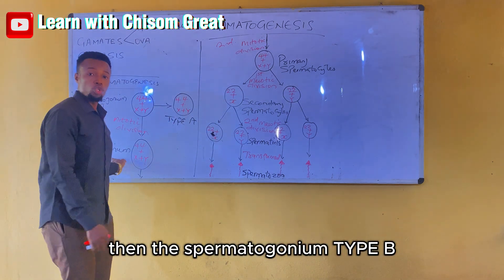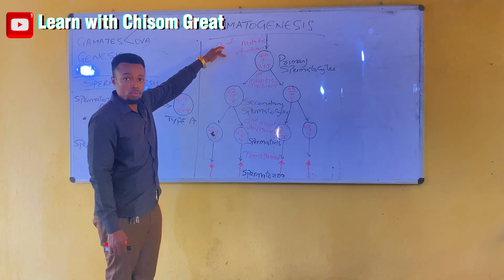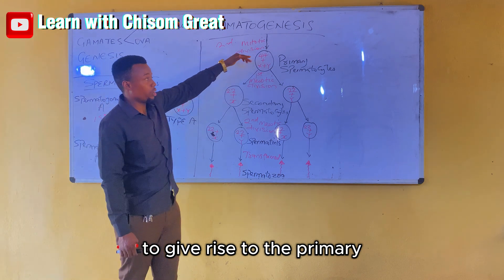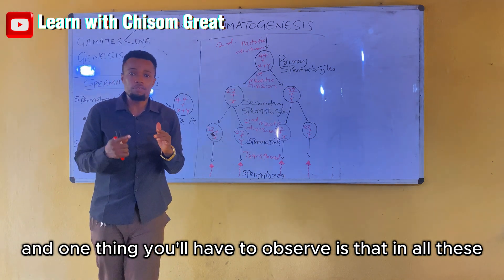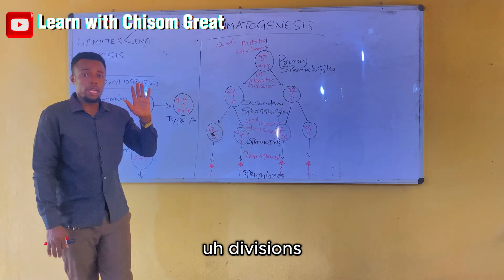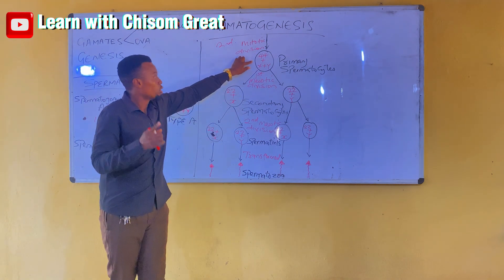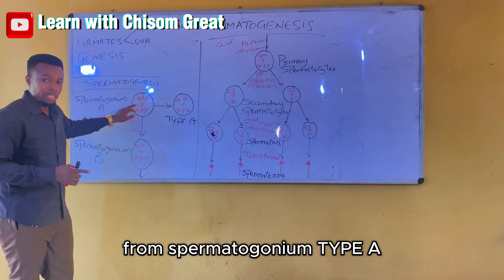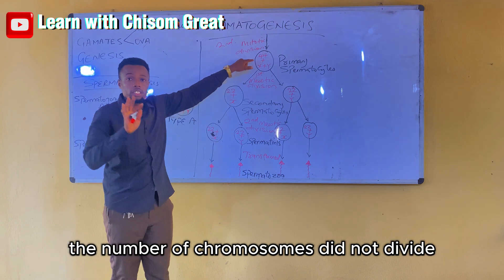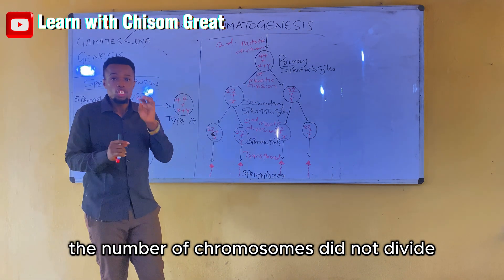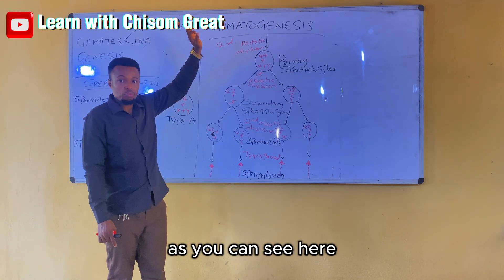Spermatogonium type B undergoes the next mitotic division to give rise to the primary spermatocyte. One thing you have to observe is that in all these divisions, the number of chromosomes remains the same — from spermatogonium type A to spermatogonium type B to the primary spermatocyte, the chromosome number does not divide. It remains 46.